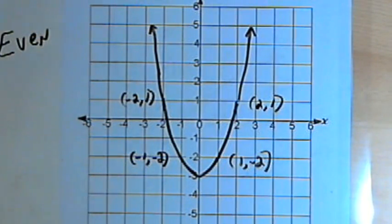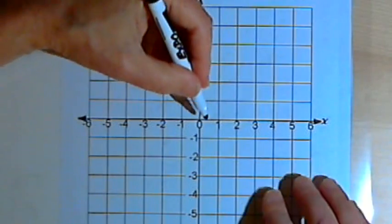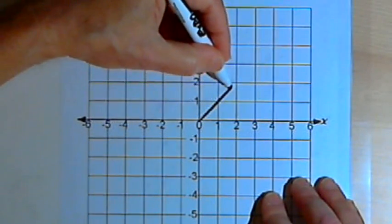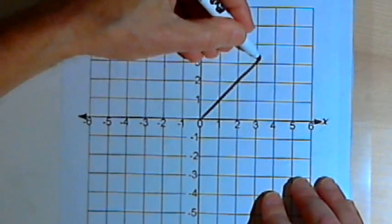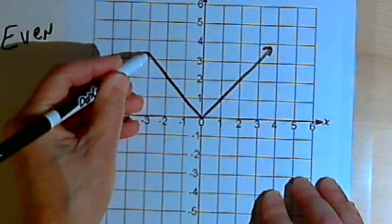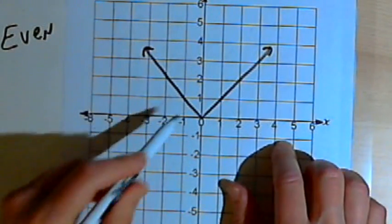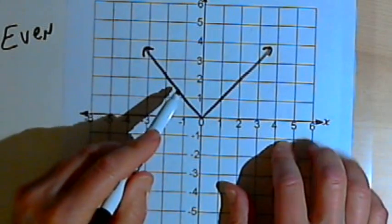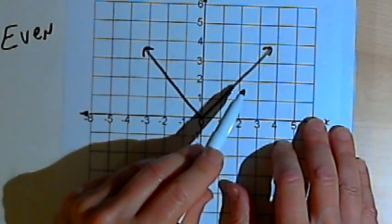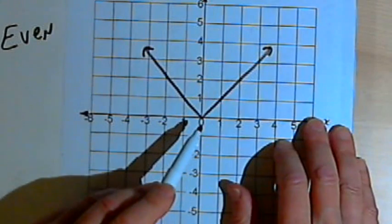So your graph might look like this. If you're familiar with the absolute value function, you might have a graph that looks like a V. That would also be an even function — a graph which is symmetrical with respect to the y-axis.